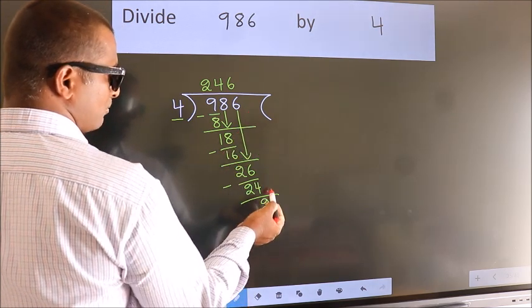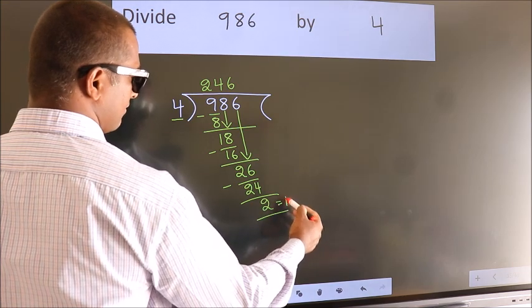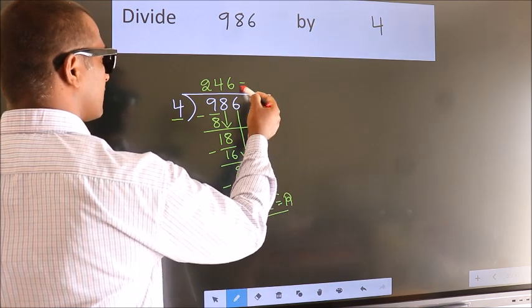No more numbers to bring down. So we stop here. This is our remainder. This is our quotient.